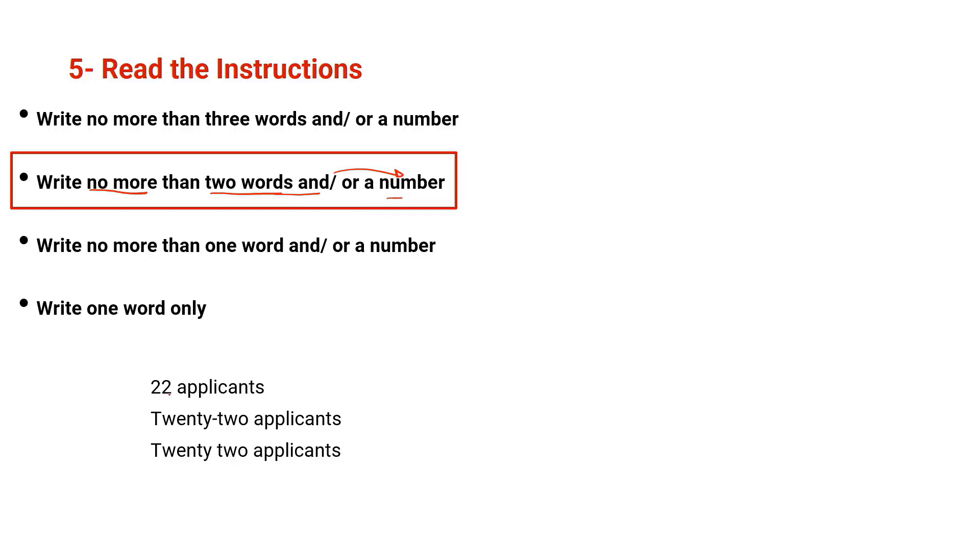So imagine that you hear this word in the track: 22 applicants. So what do you think the correct option here, according to the instruction, not more than two words? Of course, this one is correct. Why? Because we have a number and a word. We can have one number and one word. 22 applicants, this is also correct, because if the number is written in the form of words and hyphenated, it's considered as one word. So here we have one word and this is the other word, two words.